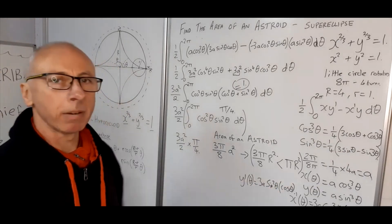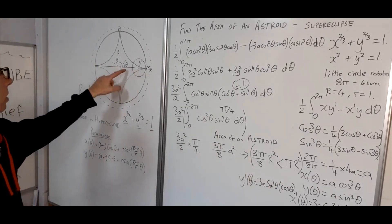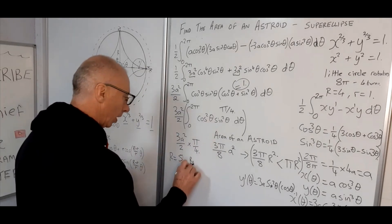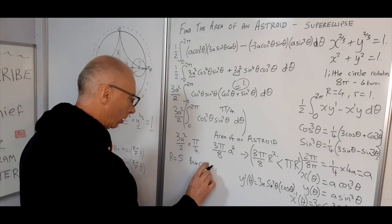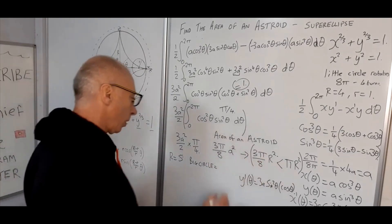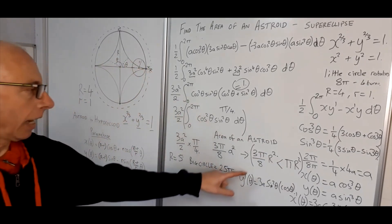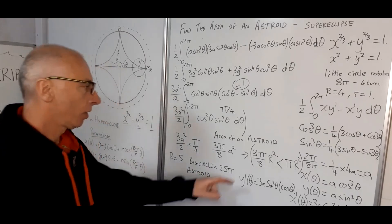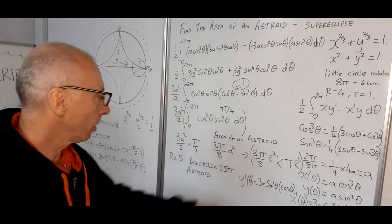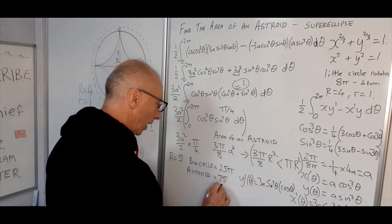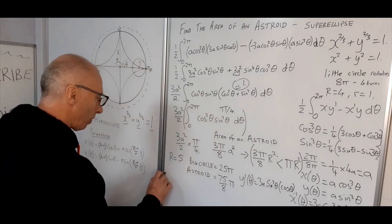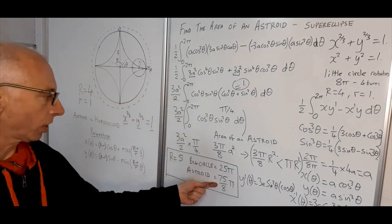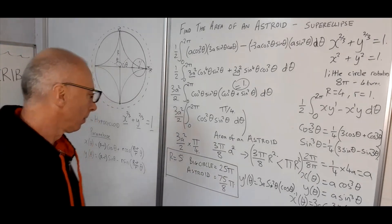For example, if the radius of the big circle is 5, the circle's area is π × 25 = 25π. The astroid's area is (3/8) × π × 25 = 75π/8. Since 75 ÷ 8 is just over 9, the astroid area is just over 9π when the enclosing circle has radius 5.